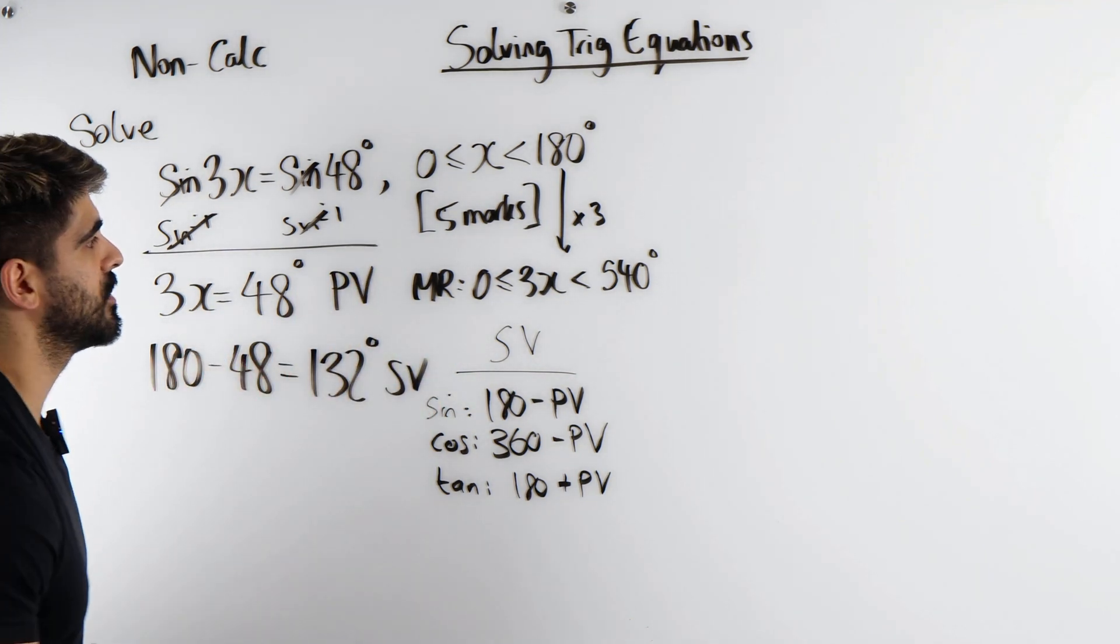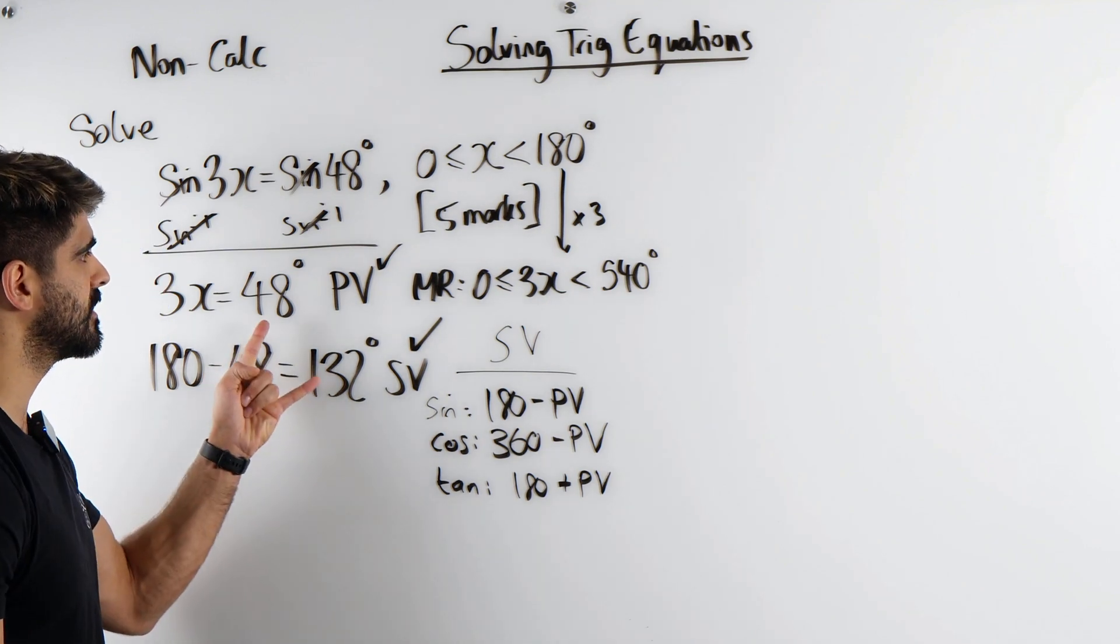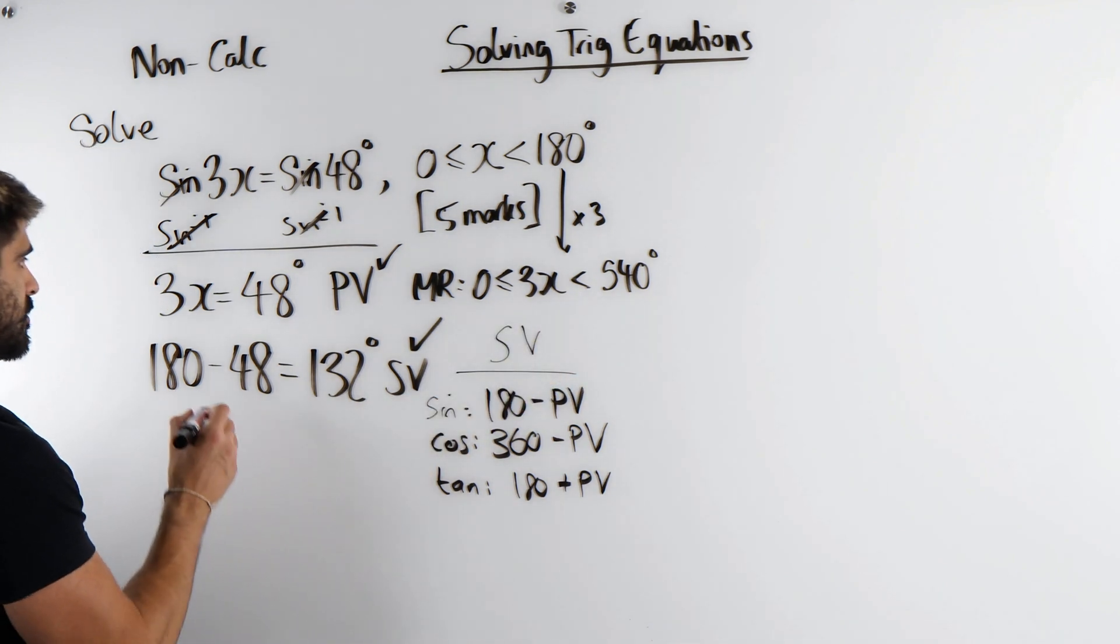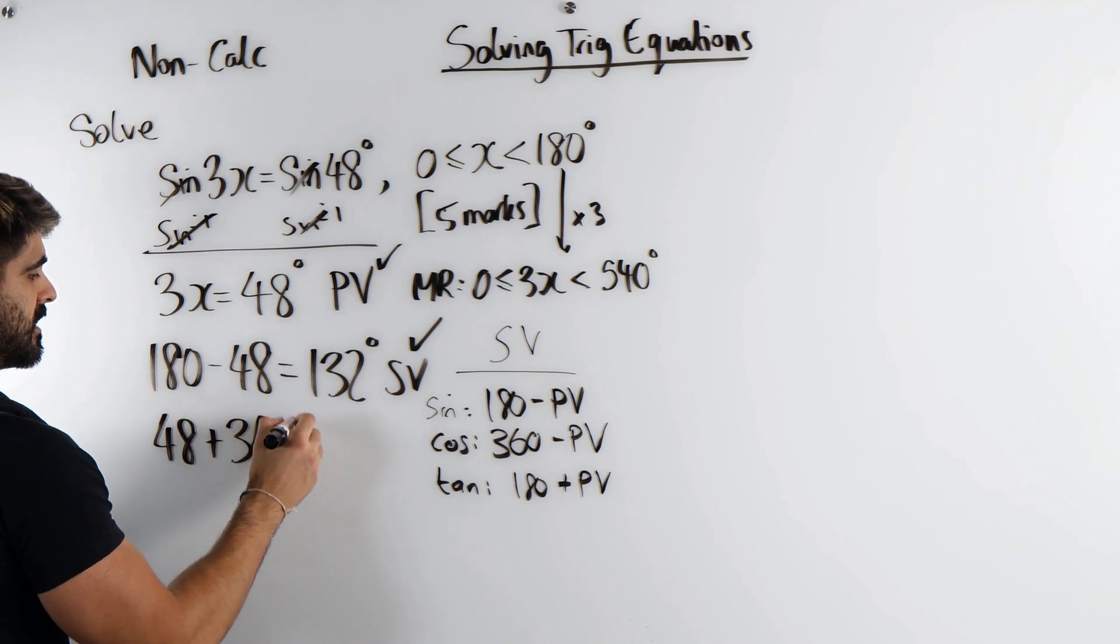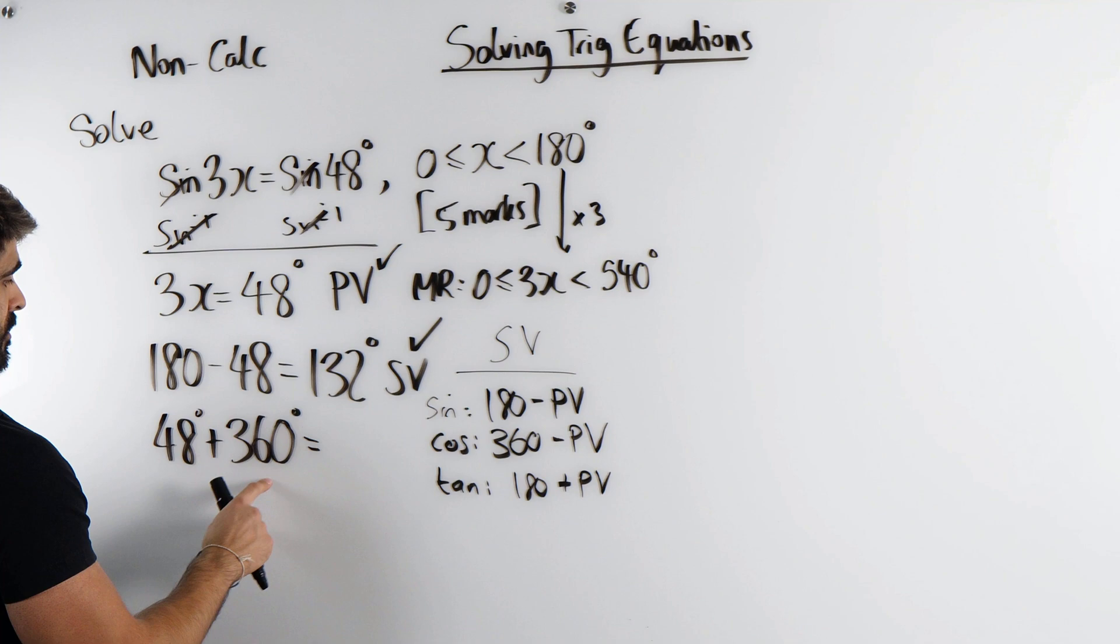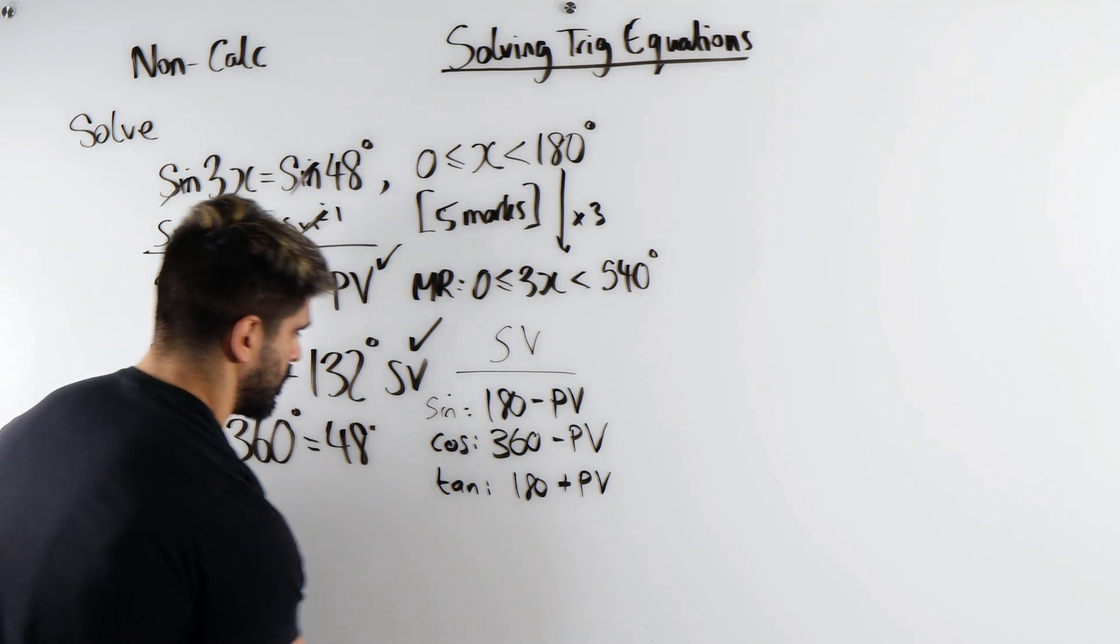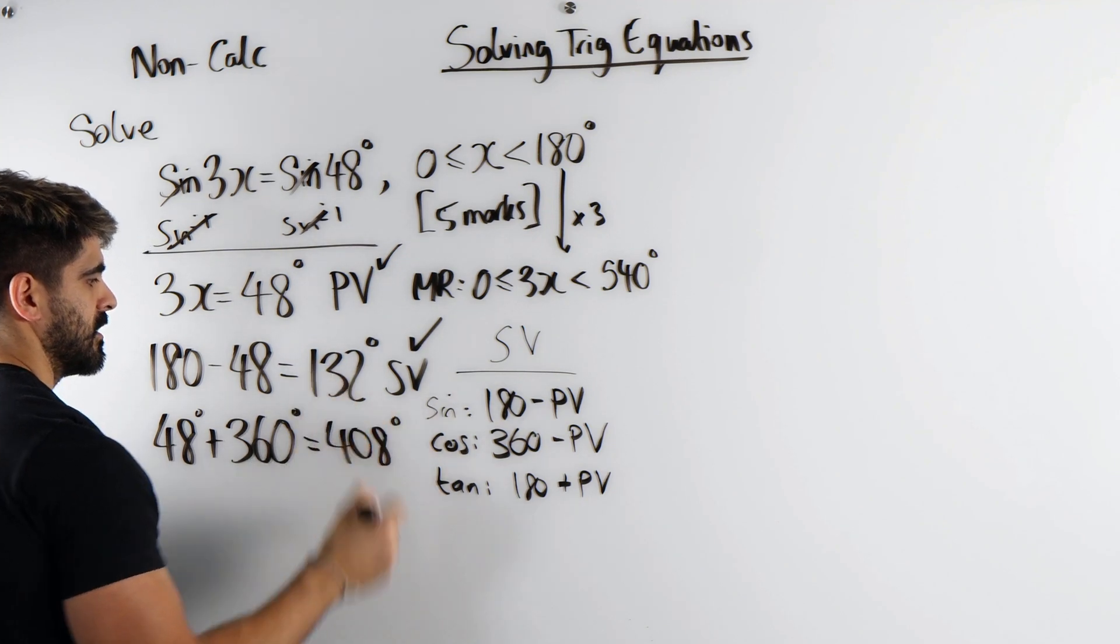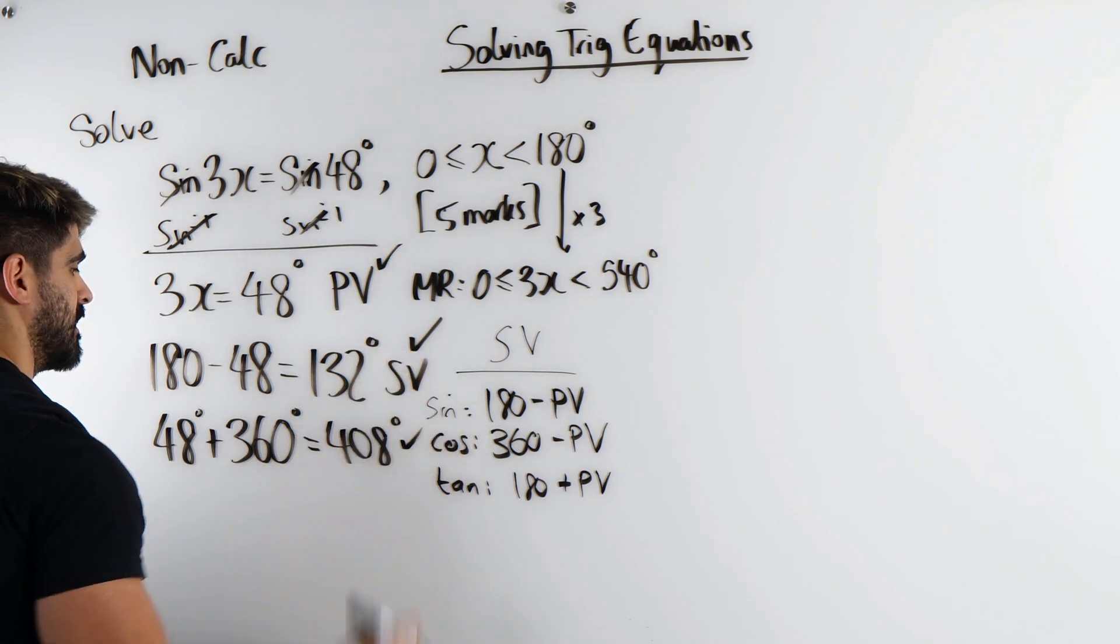Now both of these are in the range. Remember the graphs cycle every 360 degrees. So we're going to take these and add 360 and see if it's still within the limit. I'm going to take my 48 and add 360 degrees. 408 degrees. Now is that a tertiary value? If you want to call it that, but you don't need to call that anything.